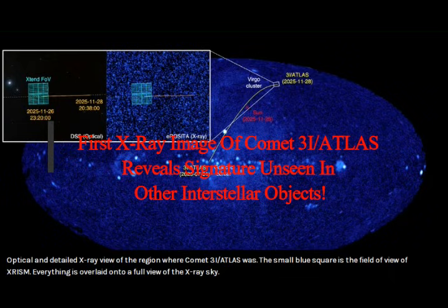First X-ray image of Comet 3I Atlas reveals signature unseen in other interstellar objects. Is it truly different or do we need to do a better calibration?